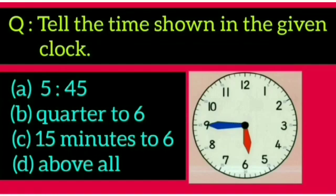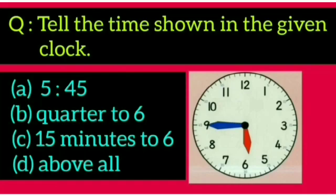Today's pass question: tell the time shown in the given clock. Option A is 5:45, option B is quarter to 6, option C is 15 minutes to 6, and option D is 'above all.' The hour hand is a little more than halfway between 5 and 6 — even though it is closer to 6, we say 5 is our number because the hour hand has not passed 6 yet. The minute hand is pointing to 9, so the time is 5:45, or 15 minutes to 6, or quarter to 6. Therefore option D — above all — is the correct answer.